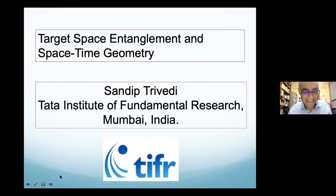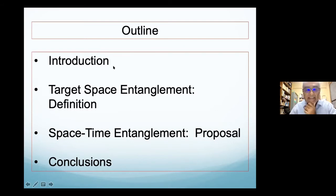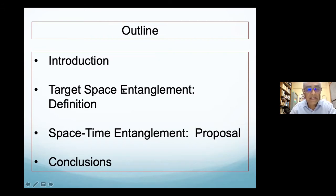My title is target space entanglement and space-time geometry, and it's based on two papers I've written with Shumit Das. The most recent one with Shumit Das, Sinong Liu, Anurag Kashyap, and Gautam Mandal, and the earlier one with Shumit, Anurag, and Gautam. I'll begin with an introduction, then tell you what I mean by target space entanglement and give a definition. I'll then propose that this notion of target space entanglement is related to and the same as bulk entanglement.